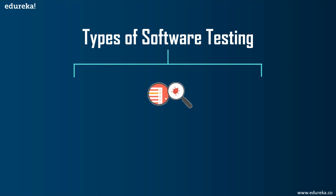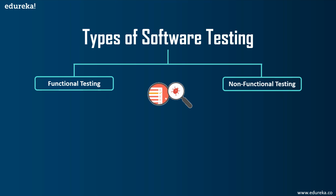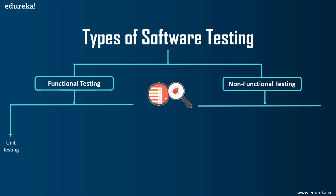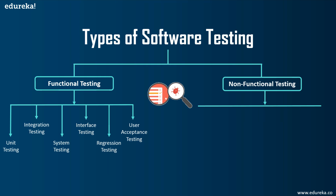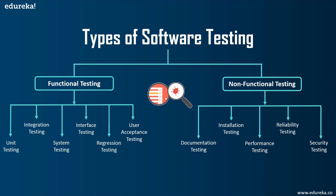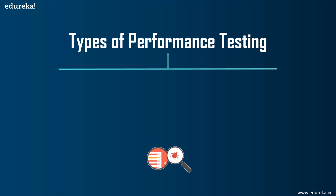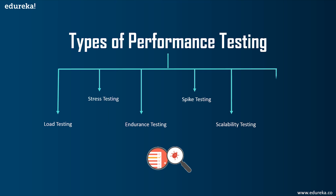Software testing is basically divided into two major parts: functional testing and non-functional testing, each subdivided into various types. Functional testing includes unit testing, integration testing, system testing, interface testing, regression testing, and user acceptance testing. Non-functional testing includes documentation testing, installation testing, performance testing, reliability testing, and security testing. Inside performance testing there is a further subdivision into load testing, stress testing, endurance testing, spike testing, scalability testing, and volume testing.